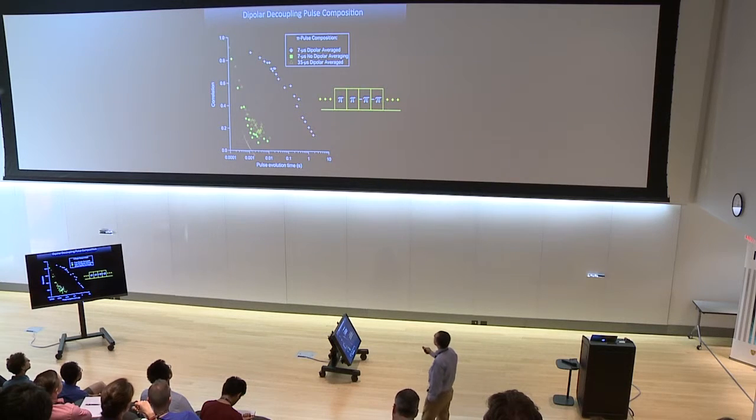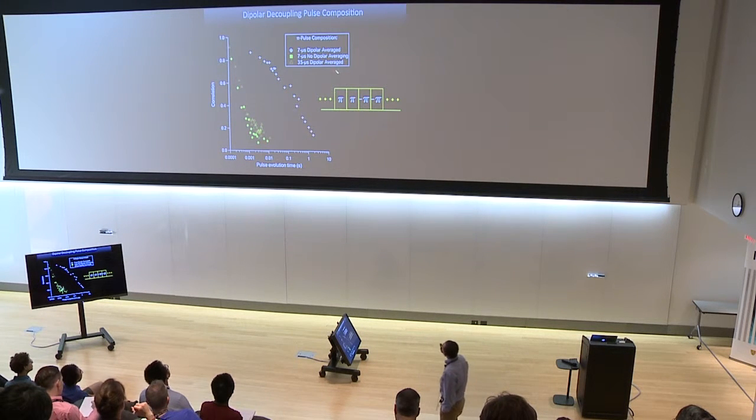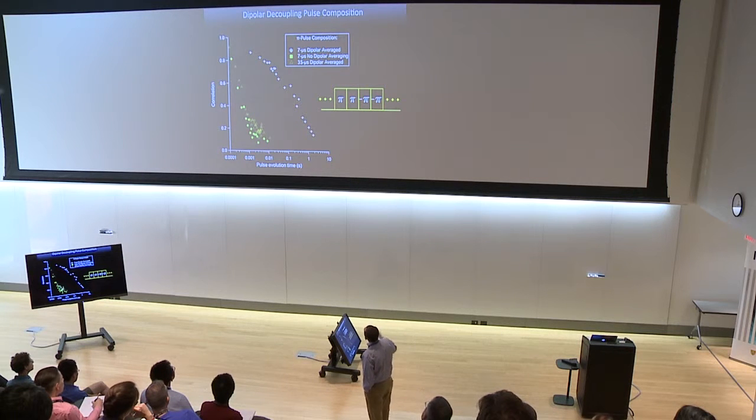We've done two other controls. We've done the same seven microsecond pulse, but we've excluded on purpose in the optimization any dipolar decoupling. We have some dipolar decoupling. Maybe the dipolar Hamiltonian gets averaged to a half or a quarter of its value, but most of it is still there. If that's the case, the decay happens under a millisecond. Likewise, we can take the dipolar average pulse and make it much longer, 35 microseconds. It also decays very fast now because the higher order terms in the dipolar Hamiltonian start to enter when you make the length of the pulse much longer than T2 star. The coherence dies very quickly.